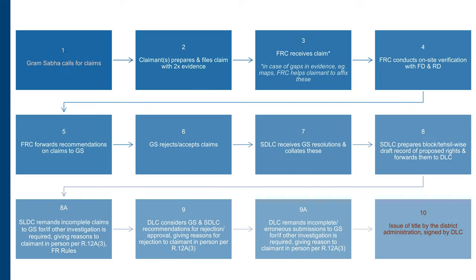On the screen, you can see a flowchart depicting the different levels of verification, recommendation, and approval that each claim goes through. It traces the process from the Gram Sabha, the Subdivisional-level committee or SDLC, and the District-level committee or DLC. All three bodies play complementary roles, like the pieces of a jigsaw puzzle that join up to complete the picture. We shall come back to this flowchart later in this lecture when we discuss the procedure for filing claims.